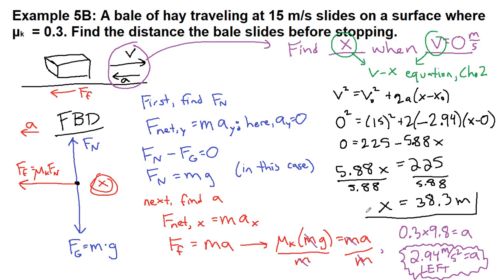So quite a considerable distance, but it is also true that this bale of hay is going about 30 miles an hour. So this is one example of many where we need to recognize that everything we do in Physics 125 kind of builds on itself slowly. So the foundational information we have from the first chapters continues to be built upon as we move forward through the semester.